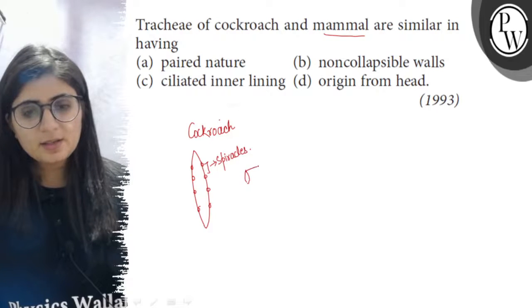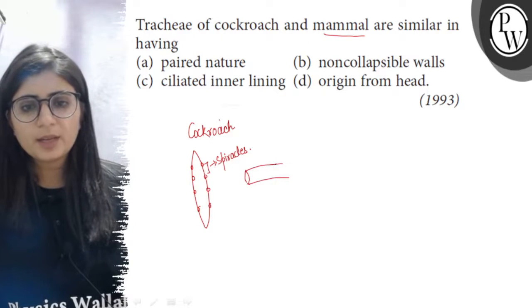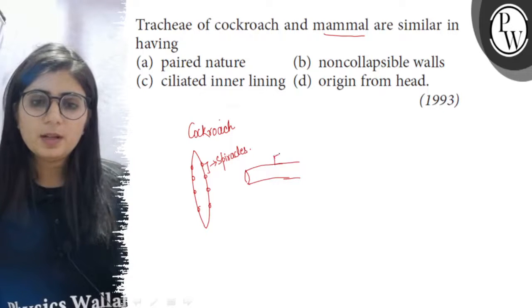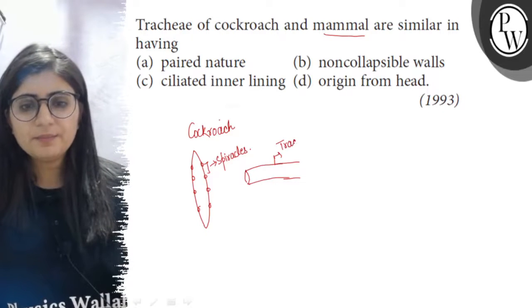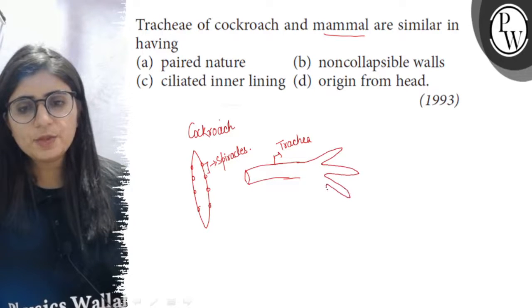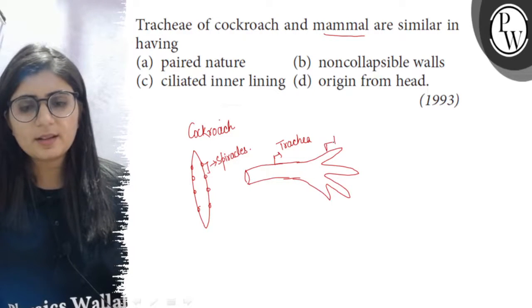These spiracles open into a tube and these tubes are known as the trachea, and trachea ultimately gets branched to form the fine tubes which are called the tracheoles.